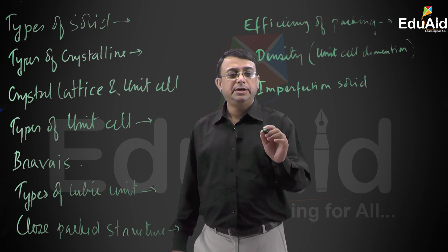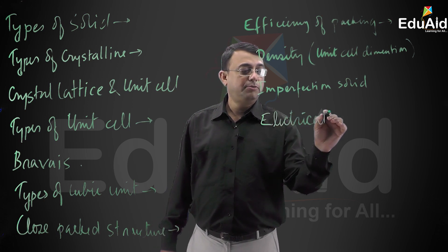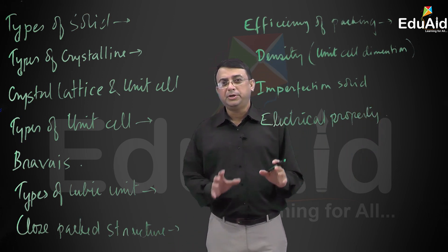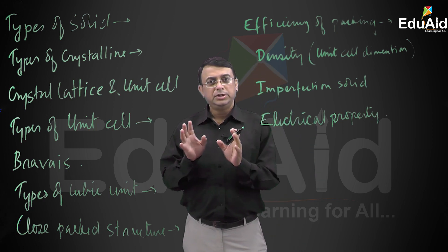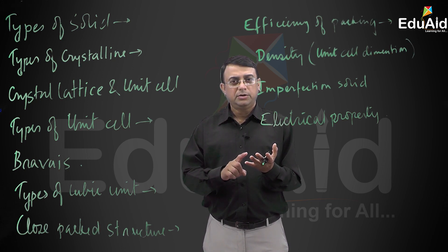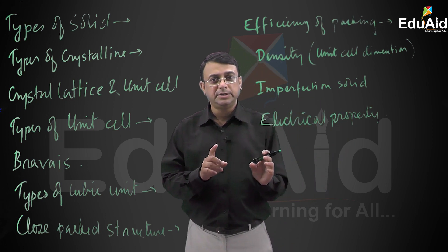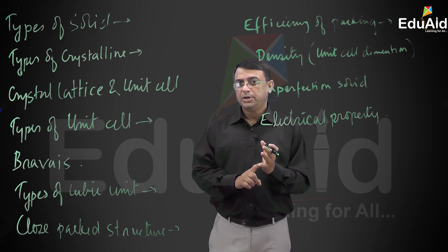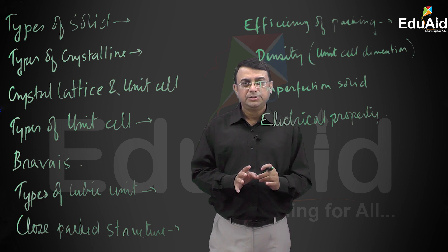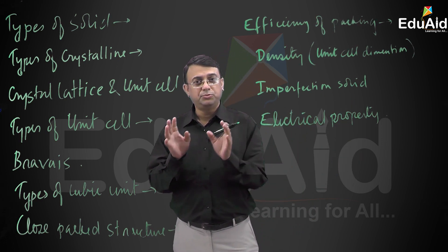After that, we have studied something about electrical properties of solids. According to electrical properties, solids are classified as conductor, semiconductor, and insulator. The classification is based on electronic arrangement — specifically the conduction band and valence band.